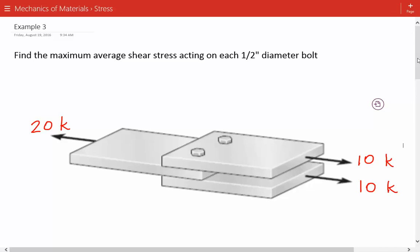Hey everybody, this is example number three for mechanics of materials covering the basic principles of stress. The problem statement is to find the maximum average shear stress acting on each half-inch diameter bolt.